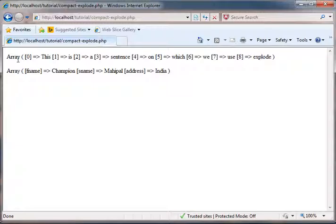First array: it contains 0th element as 'this', first element as 'is', second element as 'a', third element as 'sentence', fourth as 'on', fifth as 'which', sixth as 'we', seventh as 'use', and eighth as 'explode'.